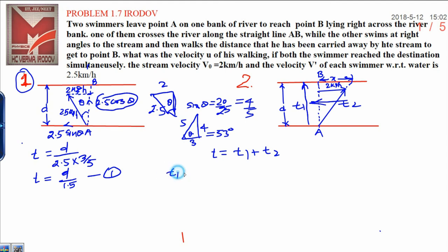First of all I want to calculate t1. t1 is equal to d upon which velocity you have to take, that is 2.5. And similarly t2 can be written as the walking time, that is why you can write x upon velocity u.